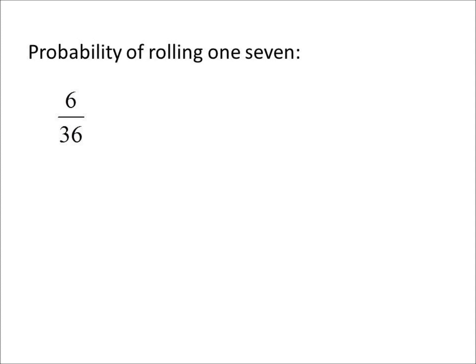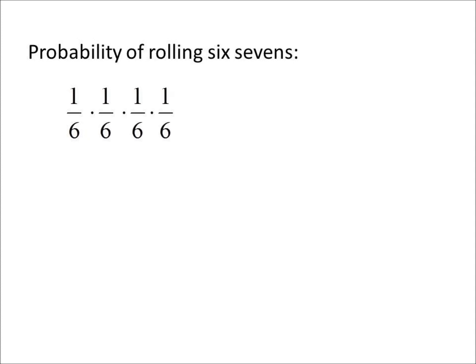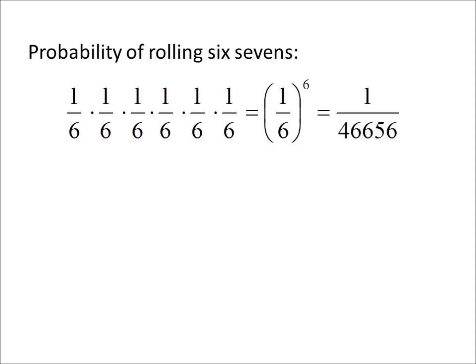Now we can use the multiplication rule to find the probability of rolling seven six times in a row. 1/6 for the first roll times 1/6 for the second roll — we continue until we have six multiplications. This is 1/6 to the sixth power, or 1 over 46,656. This is a little cumbersome, so we'll change it to a decimal: approximately 0.00002. We can agree this is a very, very small probability.